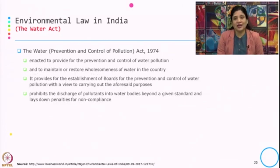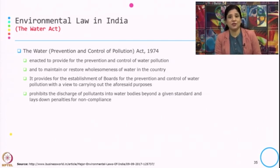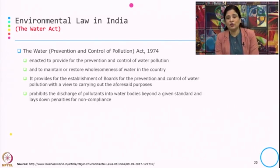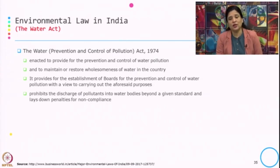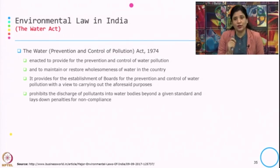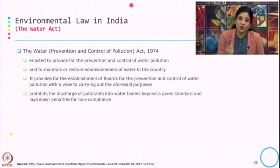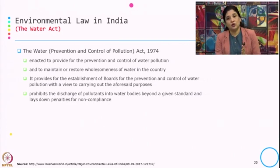Then we have the Water Act of 1974, enacted to provide the prevention and control of water pollution and to maintain and restore the wholesomeness of water in the country. It provides for establishment of boards for prevention and control of water pollution, prohibits the discharge of pollutants into water bodies beyond a given standard, and lays down penalty for non-compliance. Under the Water Act, the Central Pollution Control Board sets the dischargeable limits for water pollutants when wastewater enters the nearest water bodies — for example, limits for BOD, COD, and TSS.